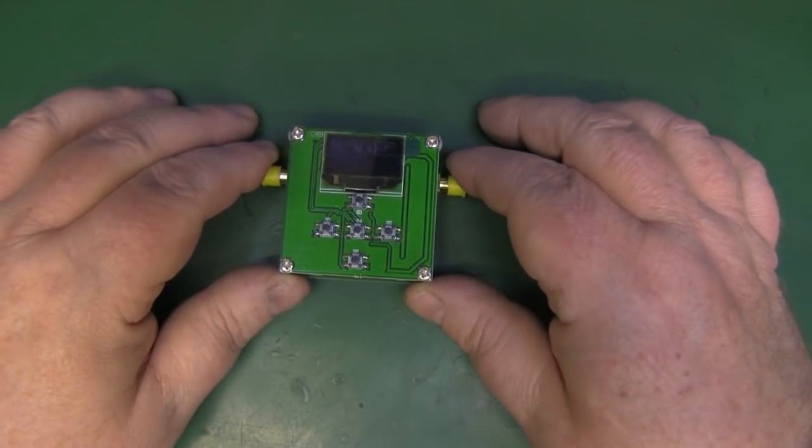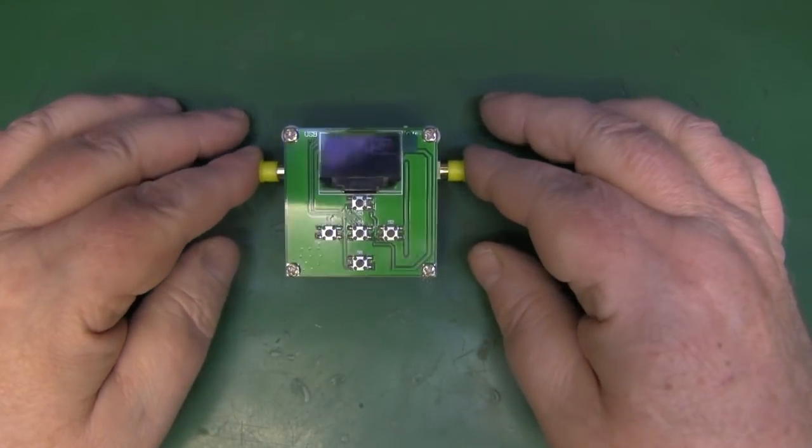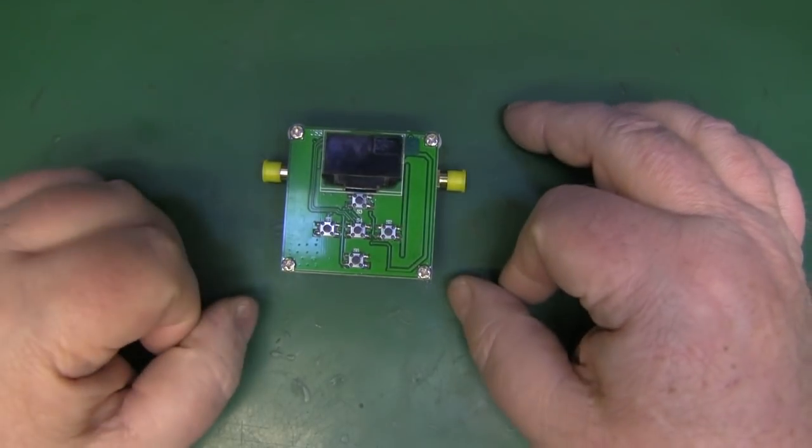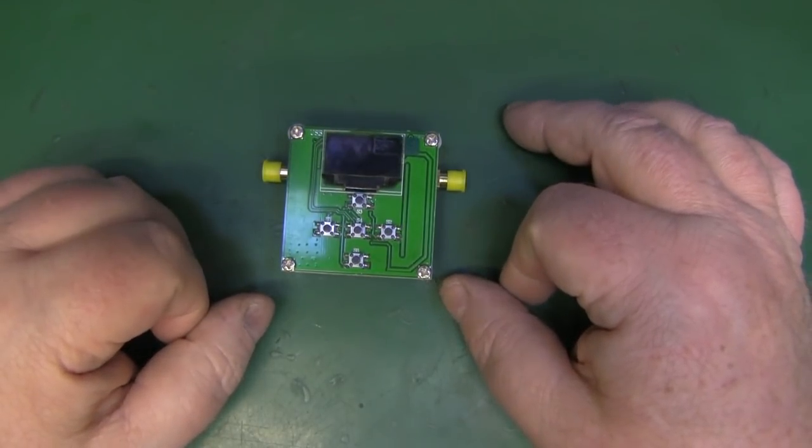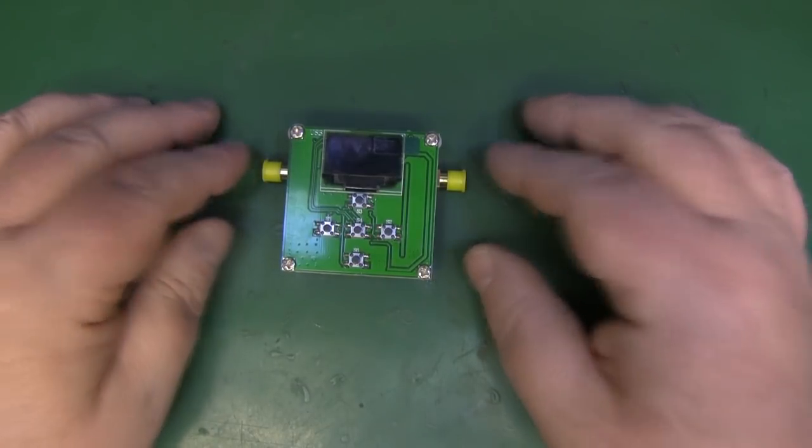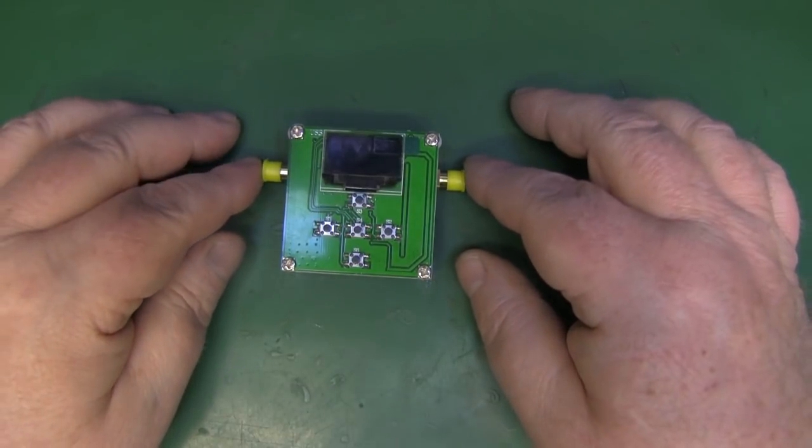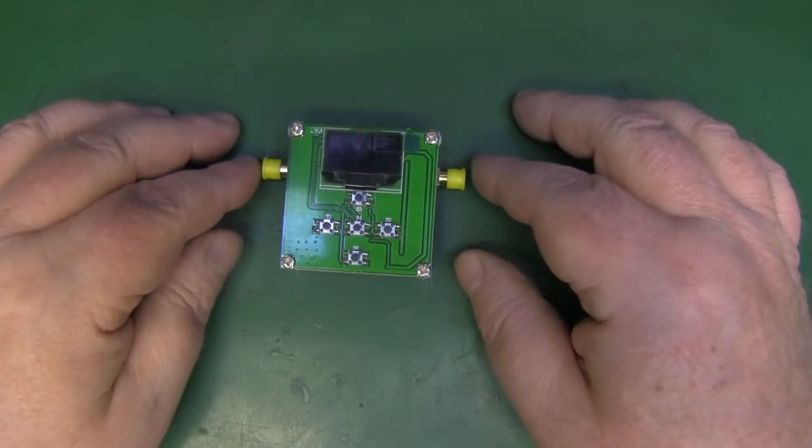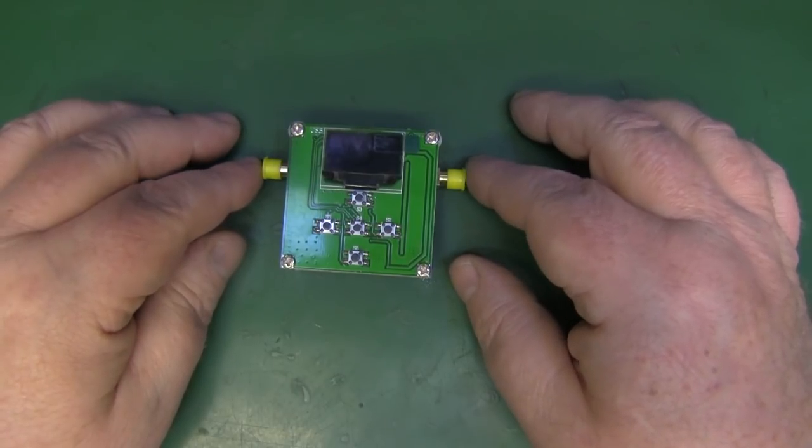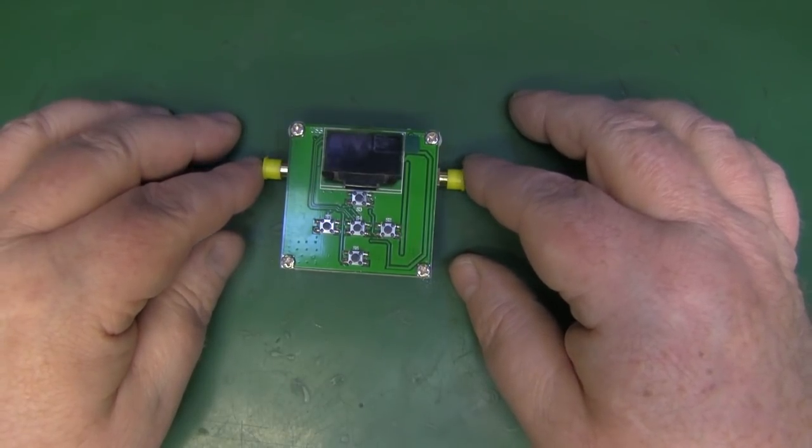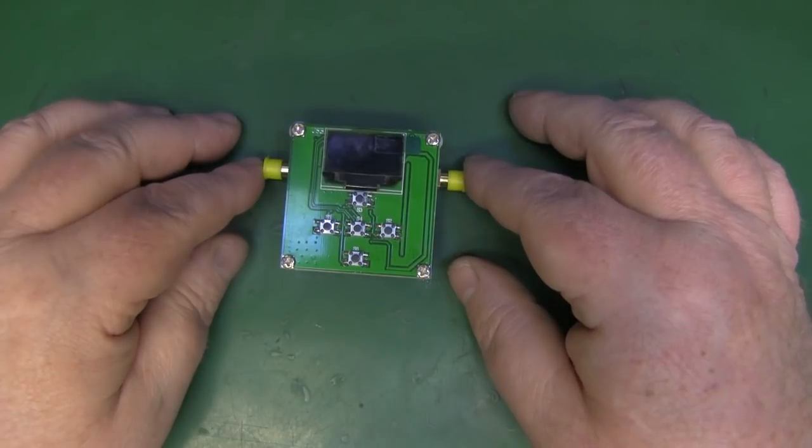In this video I thought we'd take a look at this little programmable attenuator that I picked up off eBay. Now this apparently works up to 4 gigahertz and it's capable of steps in increments of 0.25 of a dB.